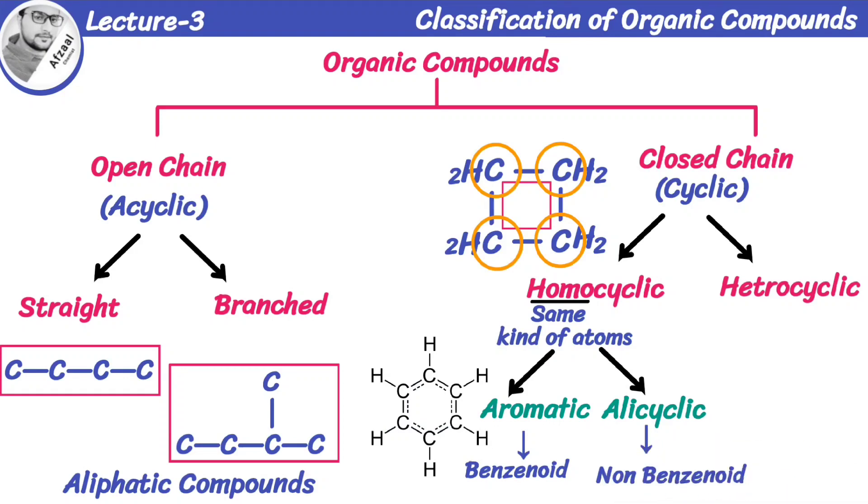Alicyclic compounds are non-benzenoid compounds because they don't have benzene ring in their structure.